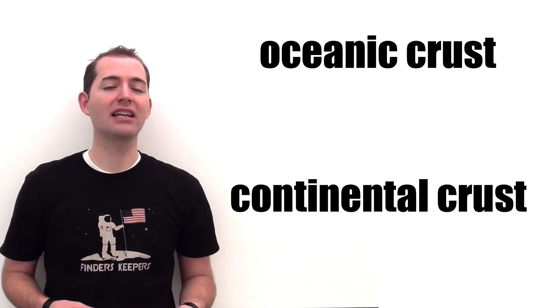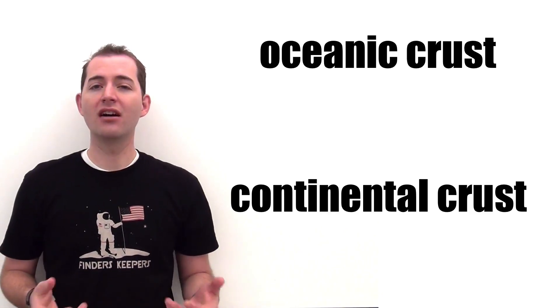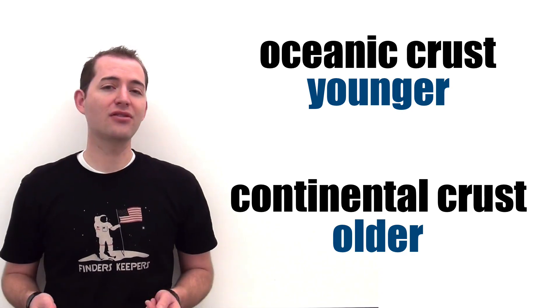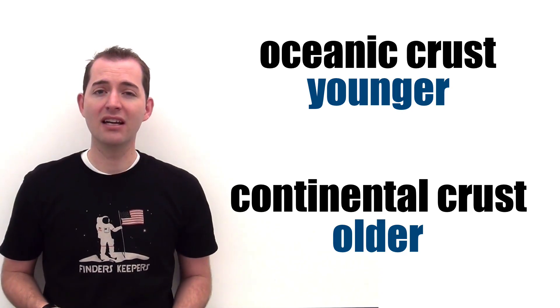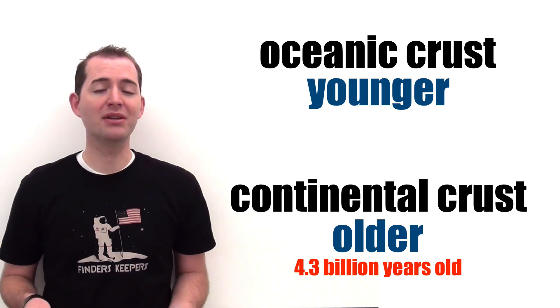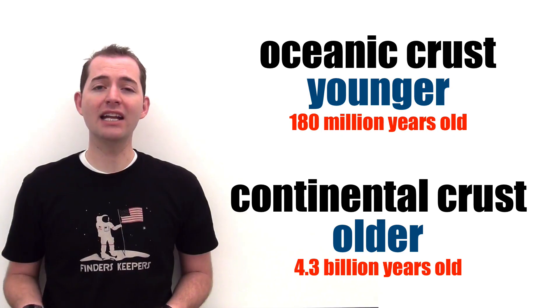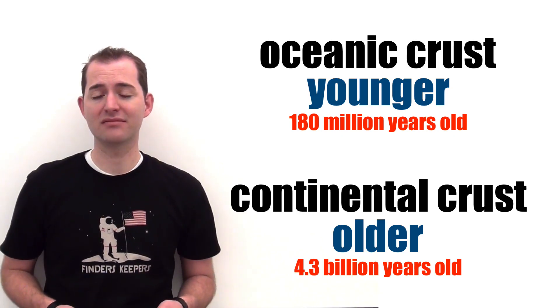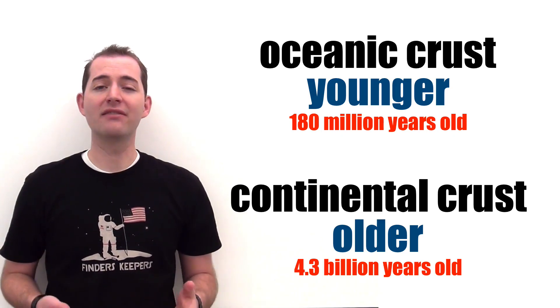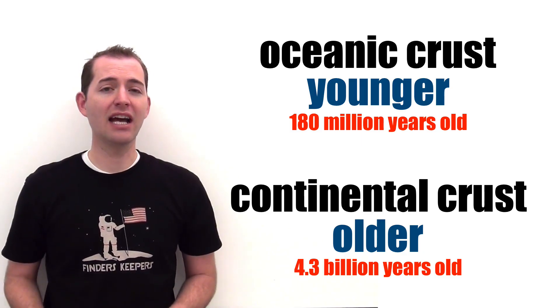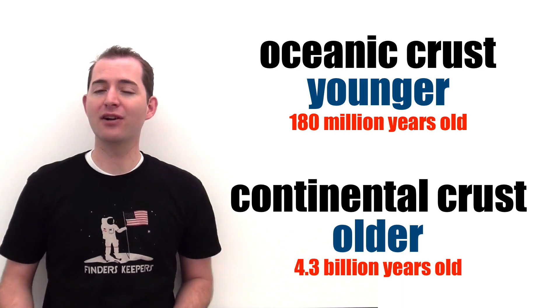Another key fact about the mechanisms that cause plate tectonics to move is the relative ages between oceanic and continental crust. Continental crust is usually much older than oceanic crust. The oldest continental crust on earth, which can be found in Australia, is about 4.3 billion years old, while the oldest oceanic crust is only about 180 million years old. This is evidence of plate tectonics, because it shows that oceanic crust is continually being recycled at convergent and divergent boundaries.